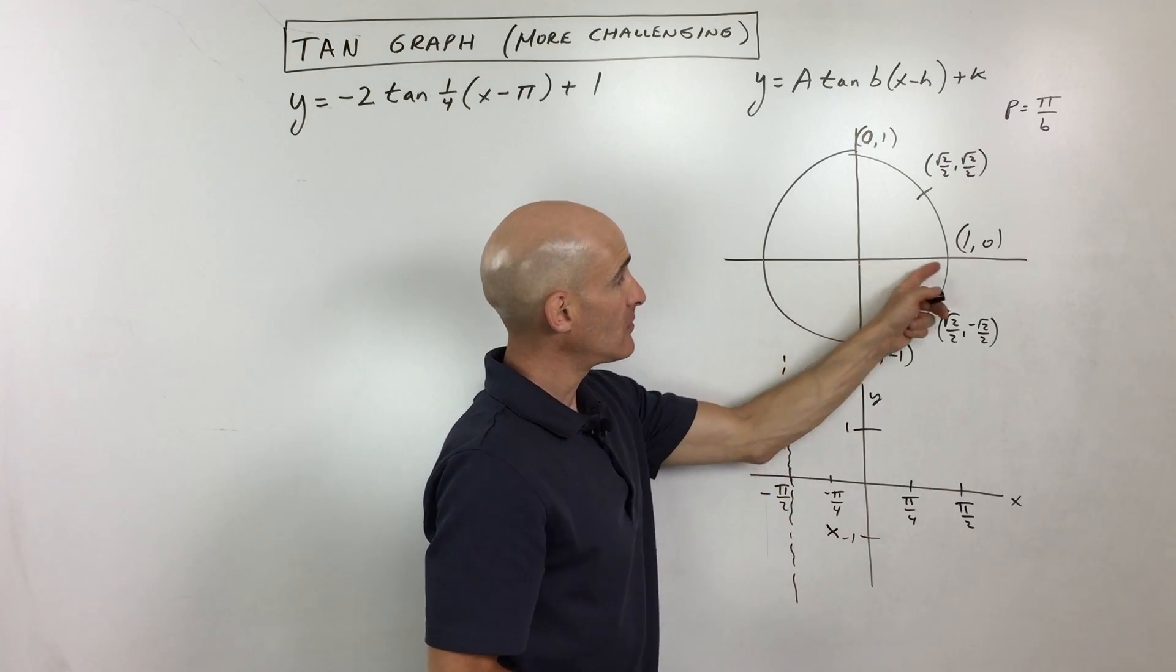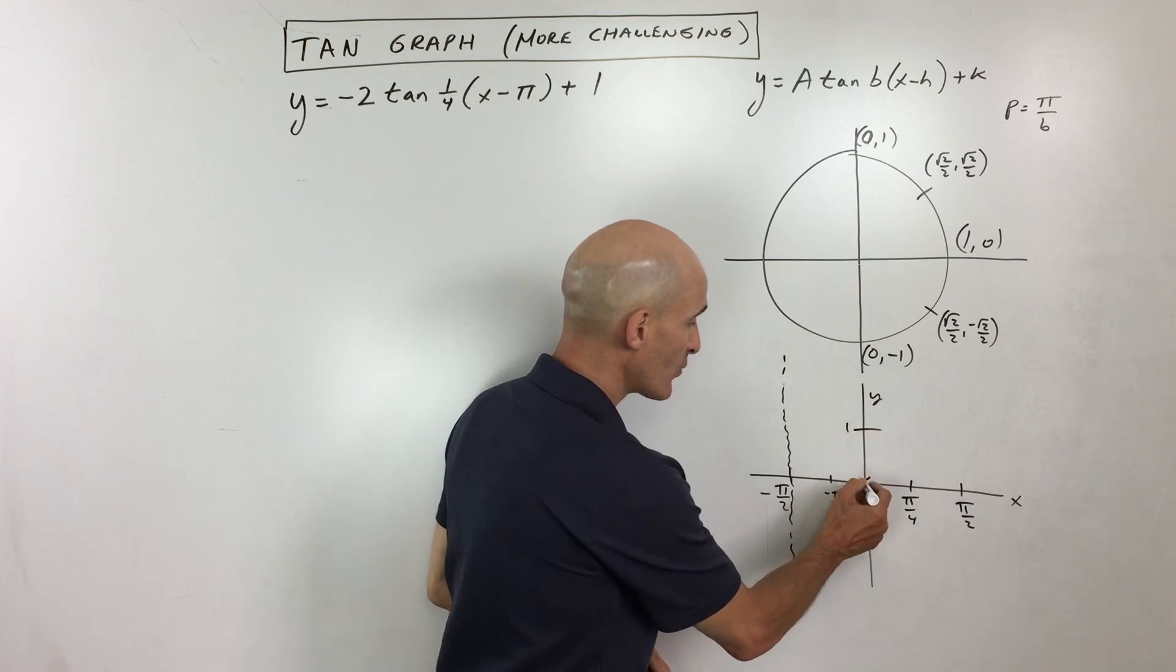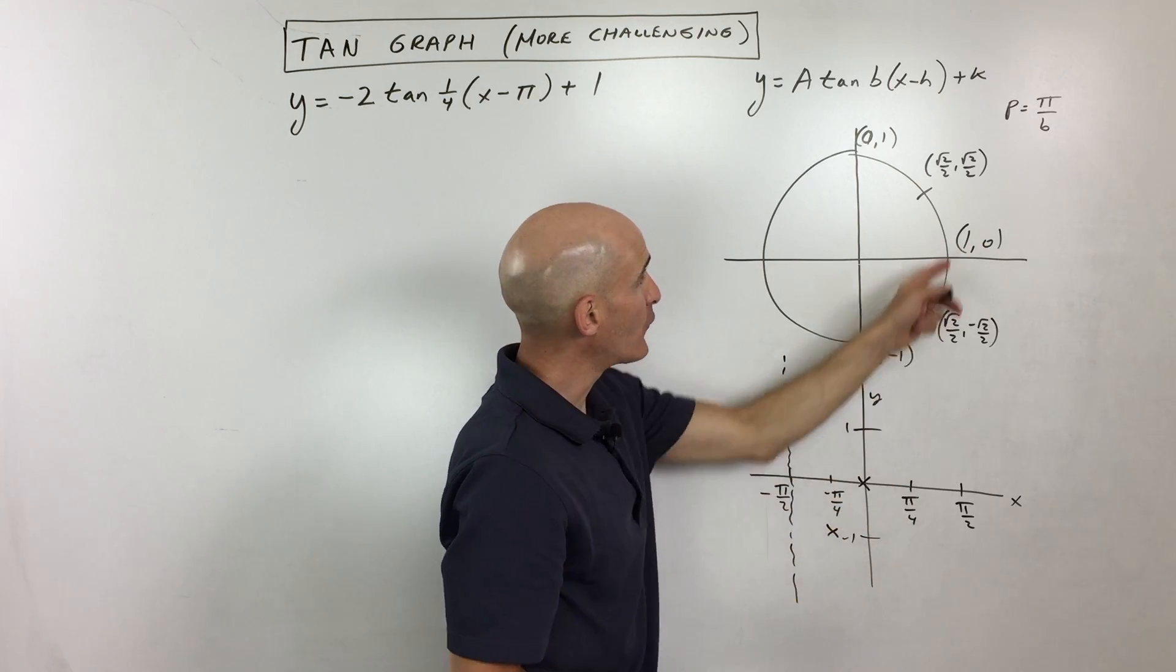At 0, we get y divided by x. 0 divided by 1 is 0, so I'm going to put a point at 0.